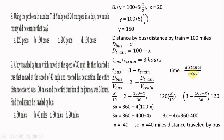Express time as distance over speed. The equation becomes: x over 40 equals 3 minus (100 minus x) over 30. This is a rational equation. The LCD of 40 and 30 is 120, so multiply both sides by 120.